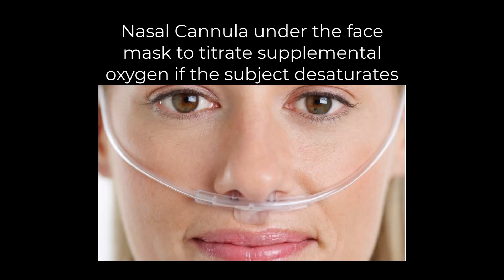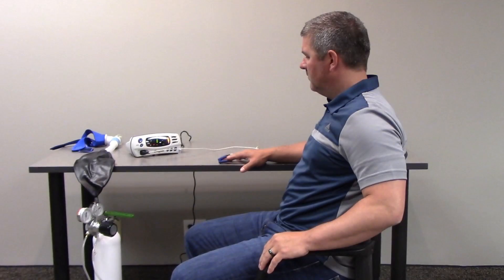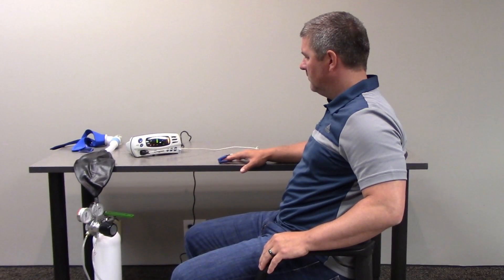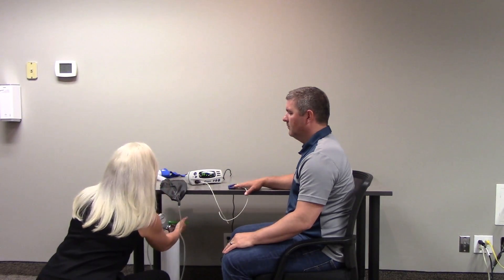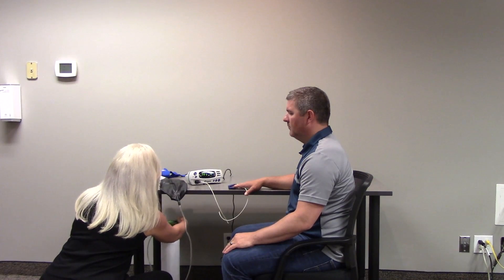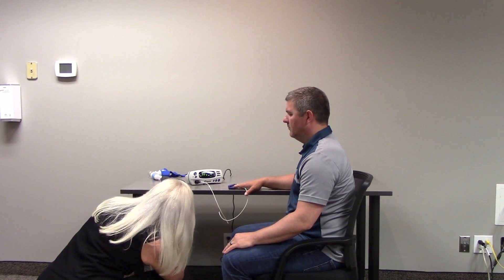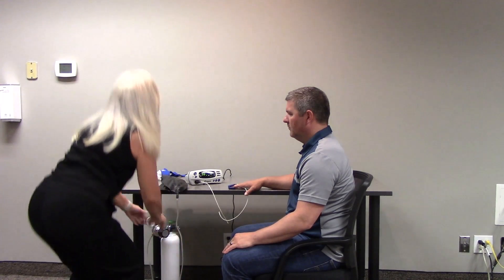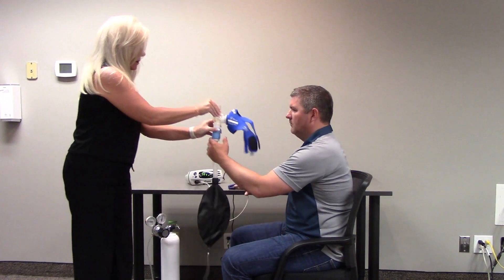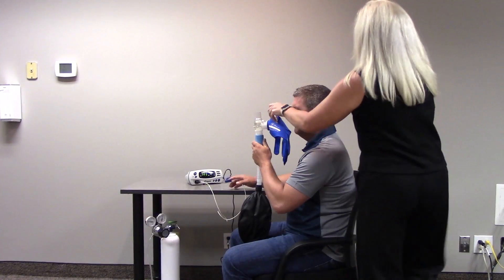During a HAST test, it is recommended that the subject wears a nasal cannula under the face mask. If the subject desaturates during the test, supplemental oxygen can be given in order to titrate the liter flow to maintain an SPO2 of 92% or greater. Prior to performing the HAST test, obtain a baseline SPO2 on room air. Turn on the gas to the diffusing bag setup and adjust the gas regulator delivery pressure to approximately 10 psi. This delivery pressure is recommended for tidal volumes of approximately 700 mL and a respiratory rate of 12 to 20.